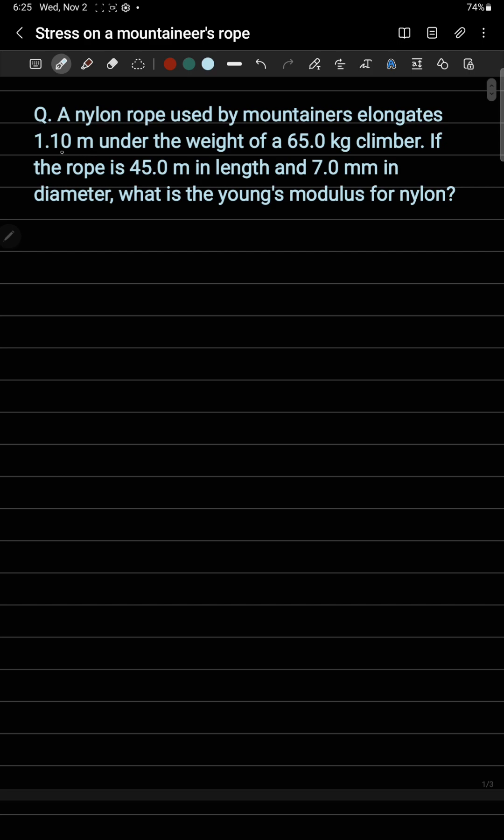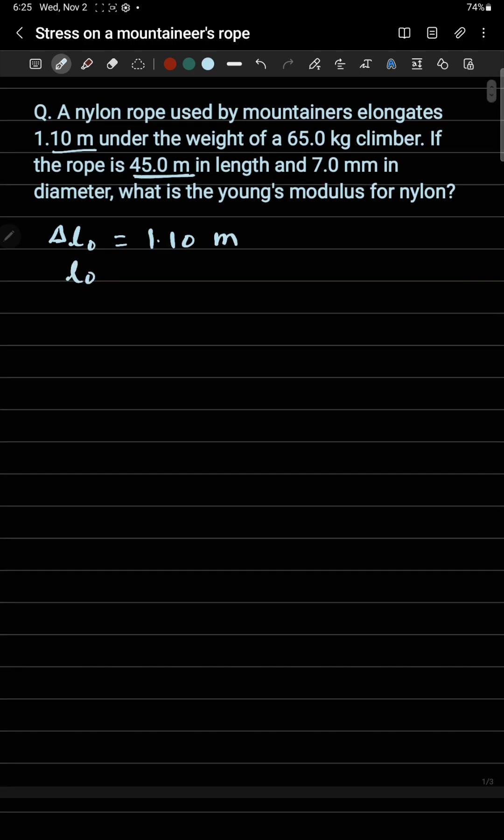The first thing given here is the elongation, delta L equals 1.10 meters. This is not L0 but the change in length, which is elongation. The original length of this rope is 45 meters, so L0 equals 45.0 meters.